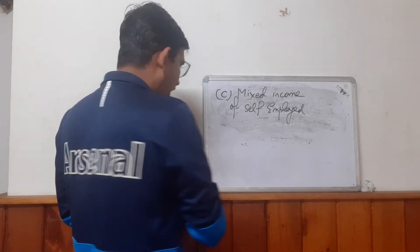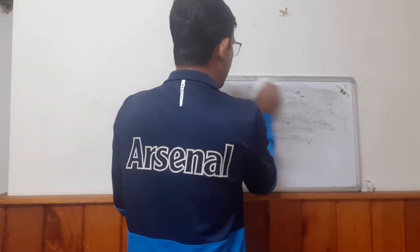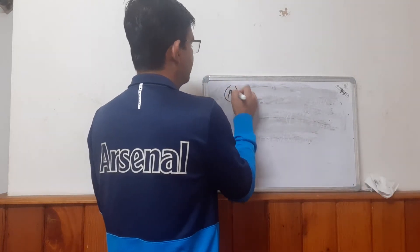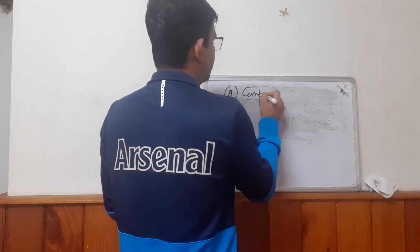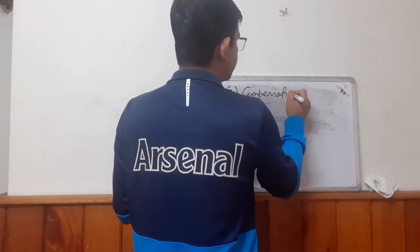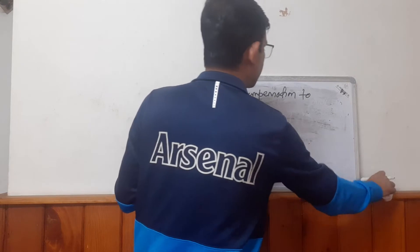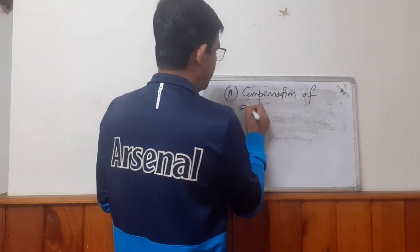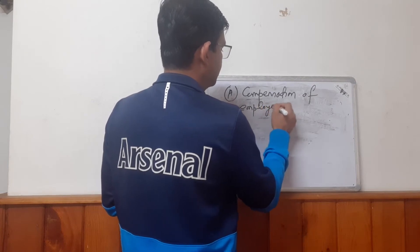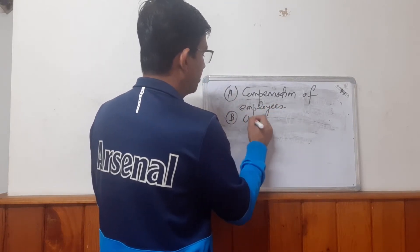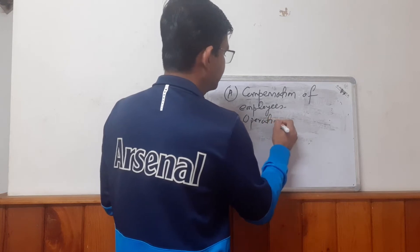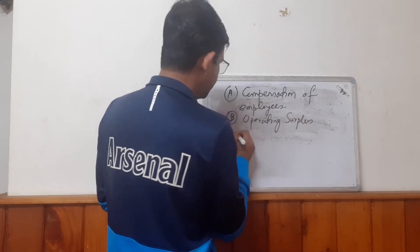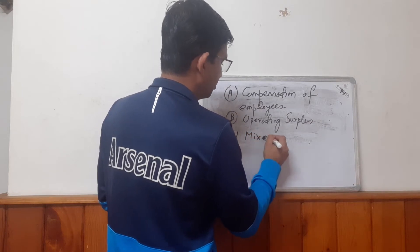So if we add component A — compensation of employees — B, operating surplus, and C, the mixed income of the self-employed, we get three of the four components of national income.